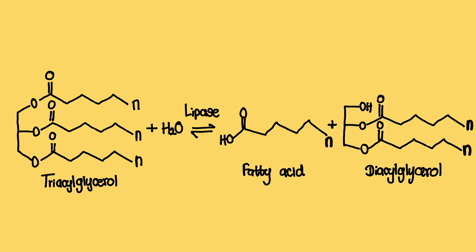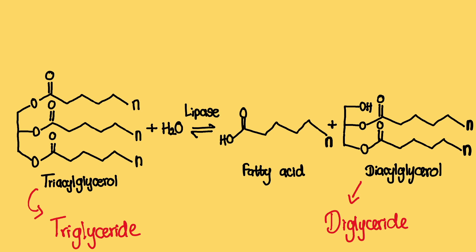Take a look at the following diagram. We have a triacylglycerol — another name for a triglyceride — getting hydrolyzed by a lipase. The ends of the fatty acid chains in stick figure form demonstrate that the fatty acid chains are really long. The lipase hydrolyzes one ester bond using one water molecule to create one fatty acid and a diacylglycerol. A diacylglycerol can also be called a diglyceride; the prefix 'di-' indicates that only two fatty acids remain attached to the glycerol.